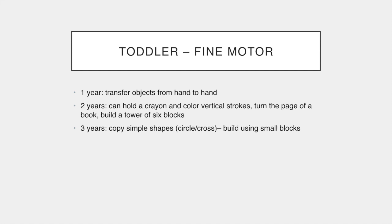Fine motor skills are also developing during this stage. At one year the child should be able to transfer objects from hand to hand. At two years they can hold a crayon and colour vertical strokes, turn pages of a book and build a tower of six blocks. At three years they can copy simple shapes such as a circle or a cross and build using small blocks. These aspects are reviewed at the 27-month check, which assesses general development including movement, speech, social skills and behaviour, hearing and vision, healthy eating and keeping active, managing behaviour and encouraging good sleeping habits, toothbrushing, keeping the child safe and vaccinations.